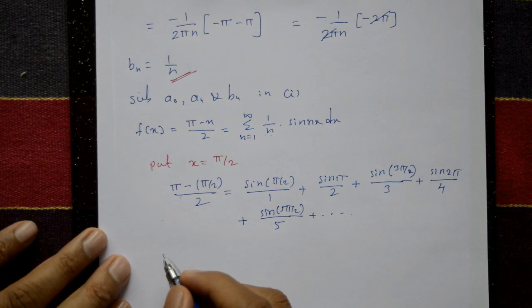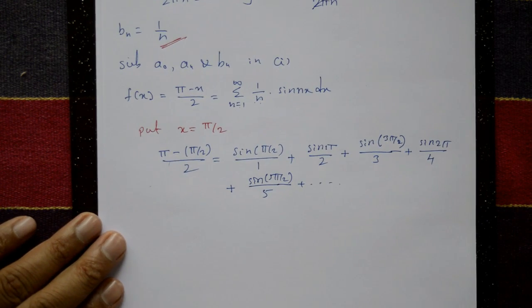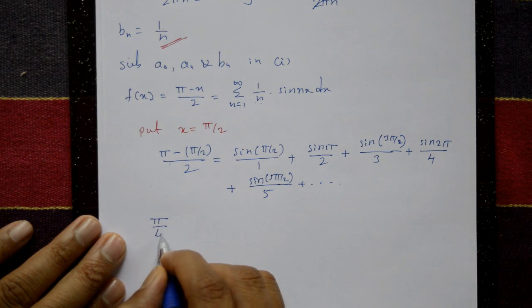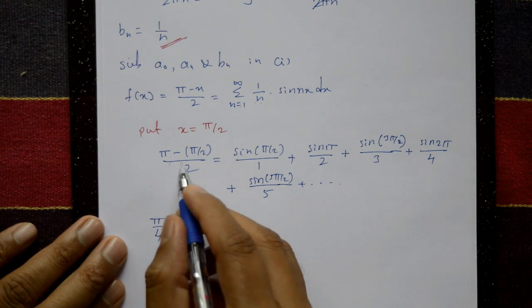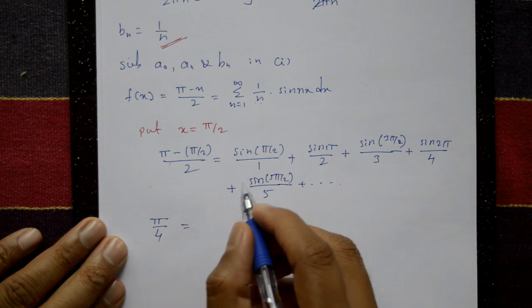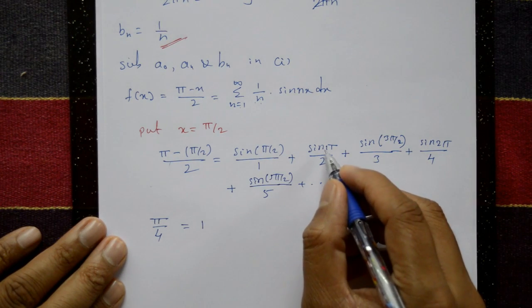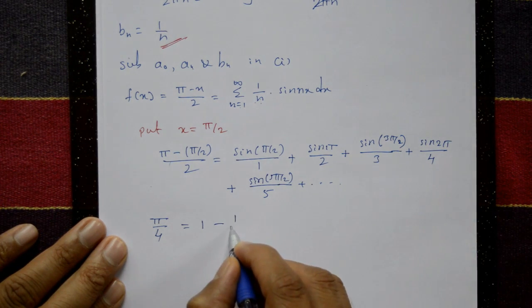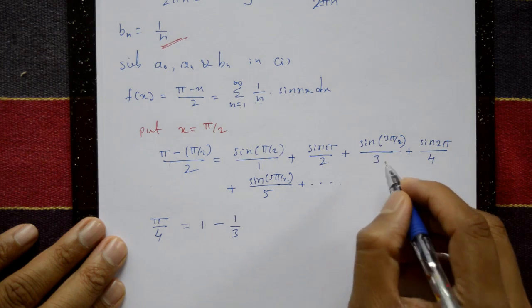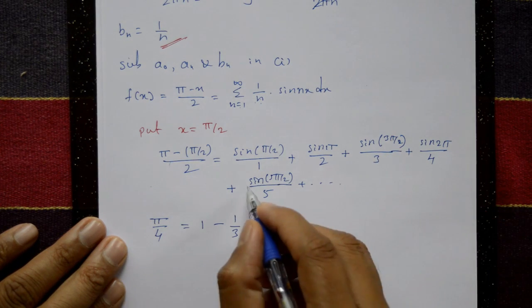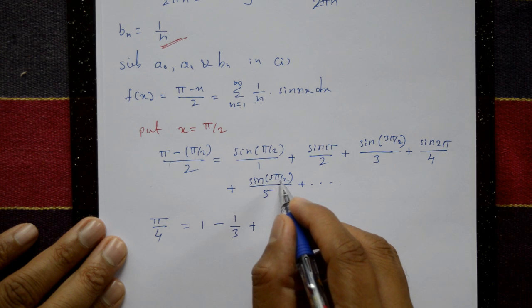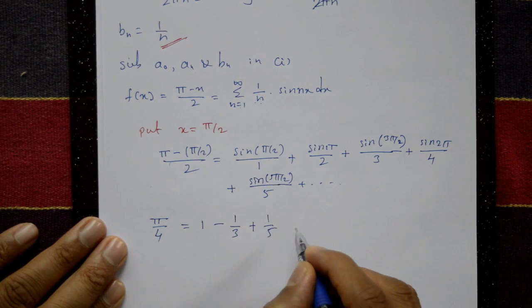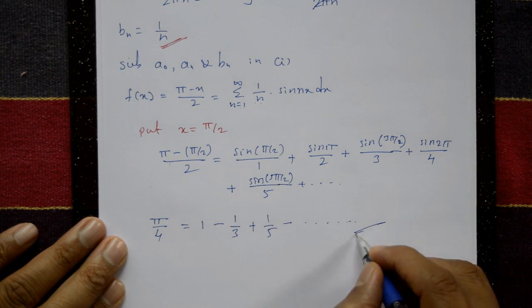Simplifying the left side gives π/4. On the right side: sin(π/2) = 1, sin(π) = 0, sin(3π/2) = -1, sin(2π) = 0, sin(5π/2) = 1, and so on. Therefore π/4 = 1 - 1/3 + 1/5 - 1/7 + ..., which is the required Leibniz series.